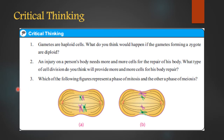We have completed the exercise. Now we move to critical thinking. Question 1: Gametes are haploid cells. What would happen if the gametes forming a zygote were diploid? Gametes are haploid — half the number of chromosomes. In humans the chromosome number is 46, so gametes have 23 chromosomes each.